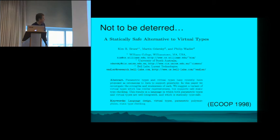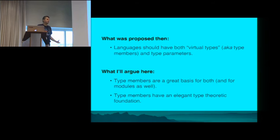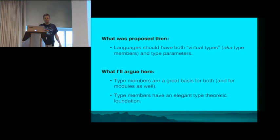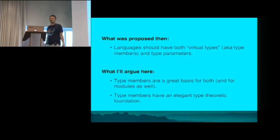That paper actually got in, with co-authors like Kim Bruce and Phil Wadler. It argued that languages should have both virtual types — what we nowadays call type members — and type parameters. What I'll argue here is that type members are a great basis for both type parameters and modules, and that type members have an elegant type-theoretic foundation. In a sense, I've come full circle.